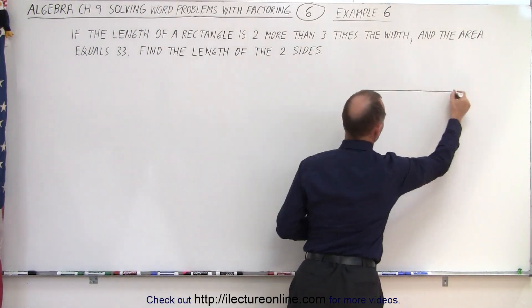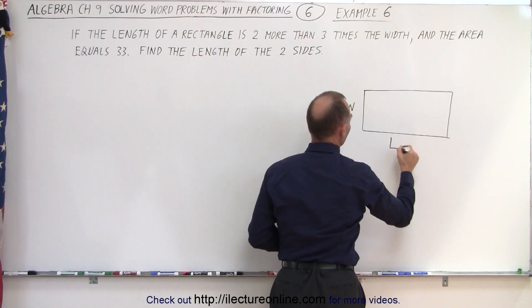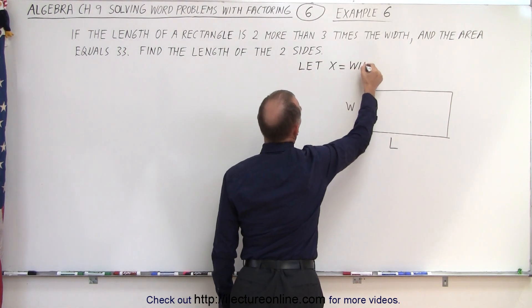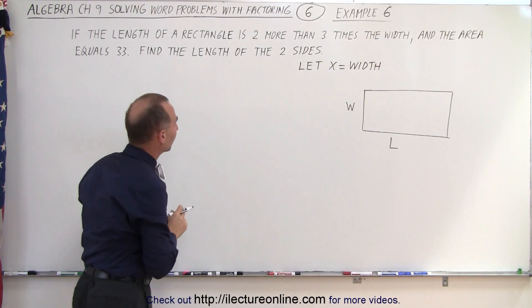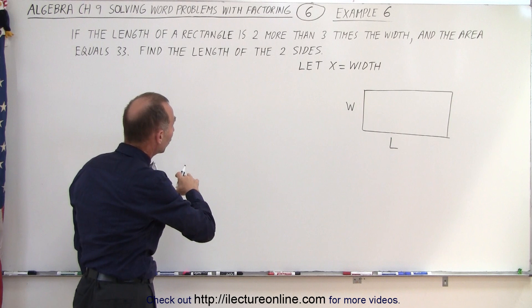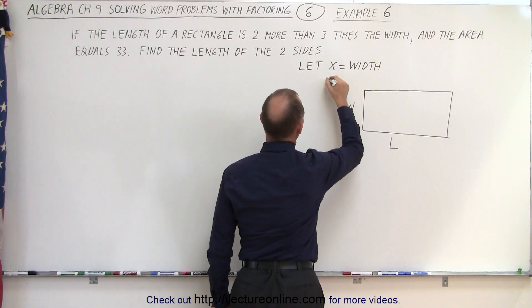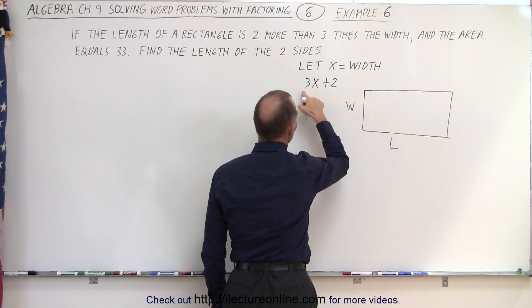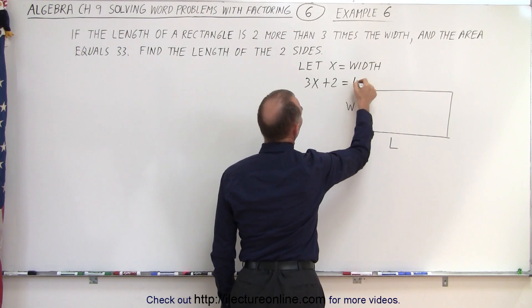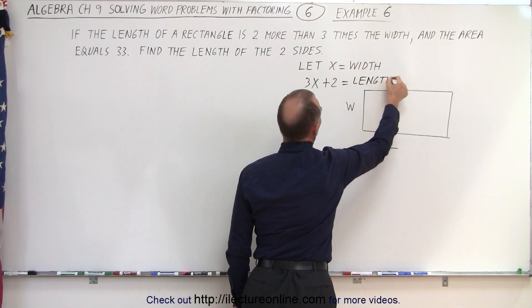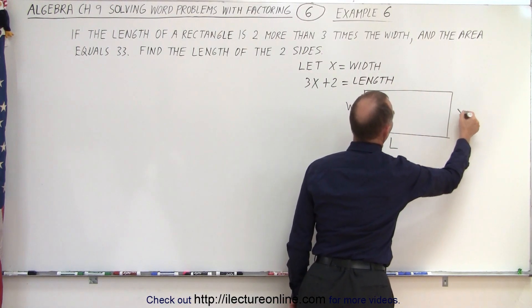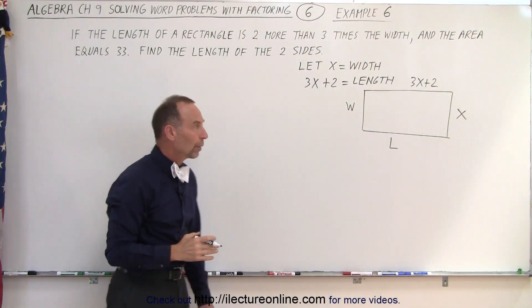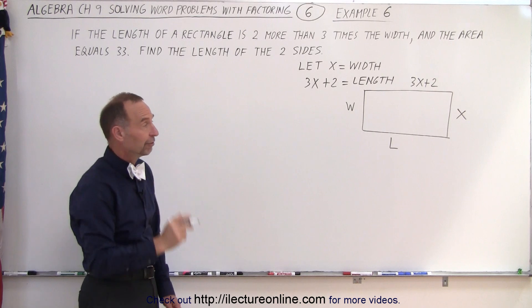So let's go ahead and draw a rectangle. We have the width and we have the length. Now, if we let x equal the width, then how would we express the length of the rectangle? Well it tells us that the length is two more than three times the width. So plus two for two more, and 3x because x equals the width, so three times x is three times the width, and then two more, that therefore equals the length.